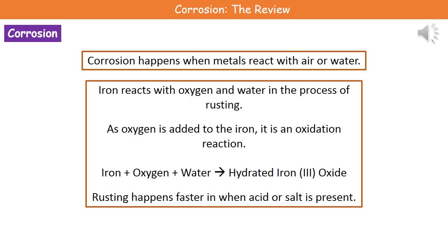As oxygen is added to the iron, we are carrying out this oxidation reaction to make hydrated iron oxide — and that's what rust is, it's iron oxide. Hence why we can't say aluminium rusts, because it's not iron oxide it's making. So our word equation for rusting is: iron plus oxygen plus water makes hydrated iron oxide.